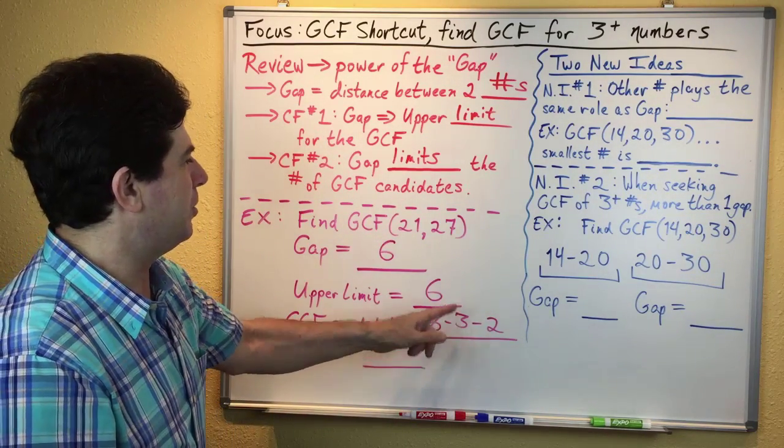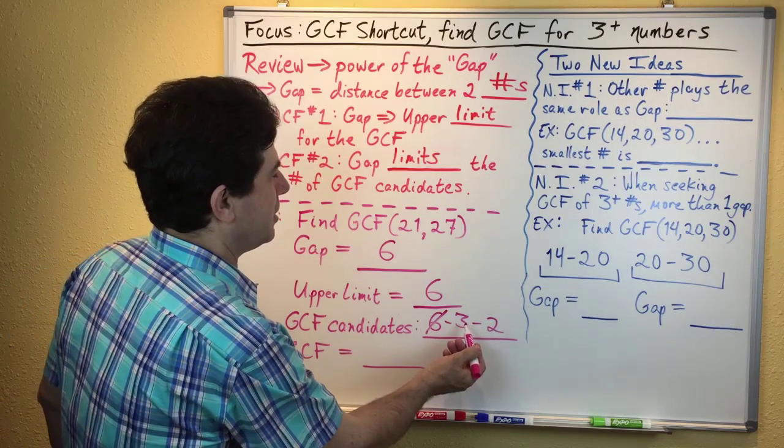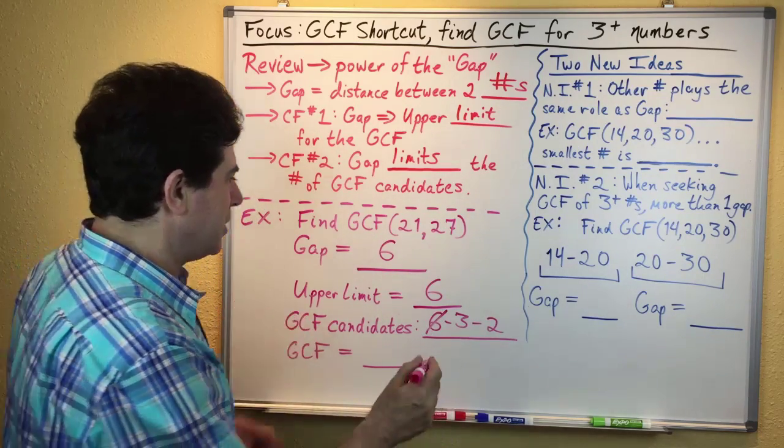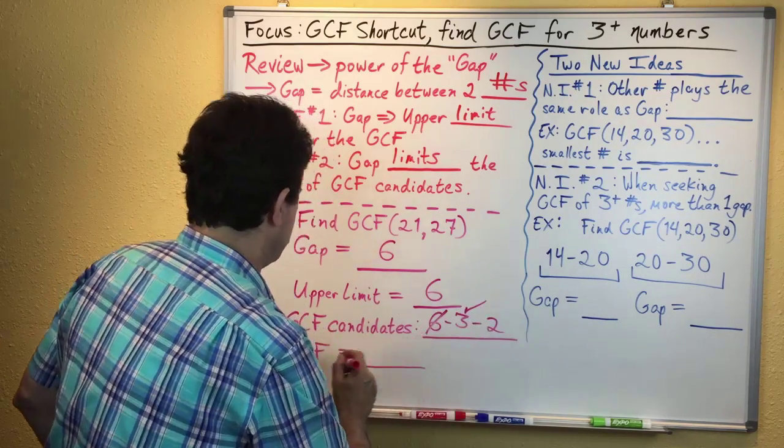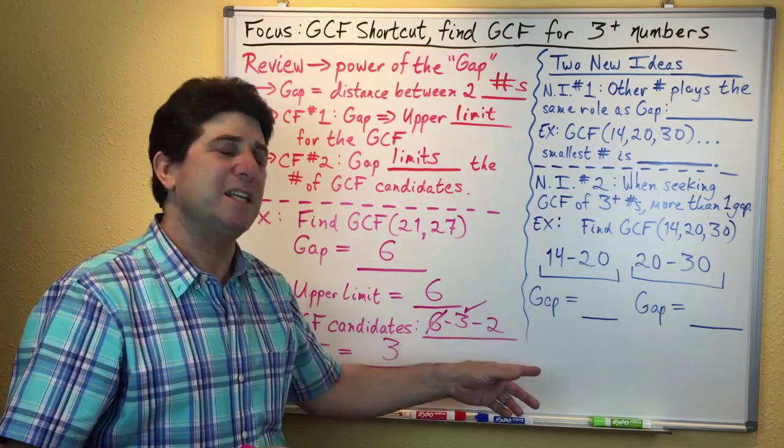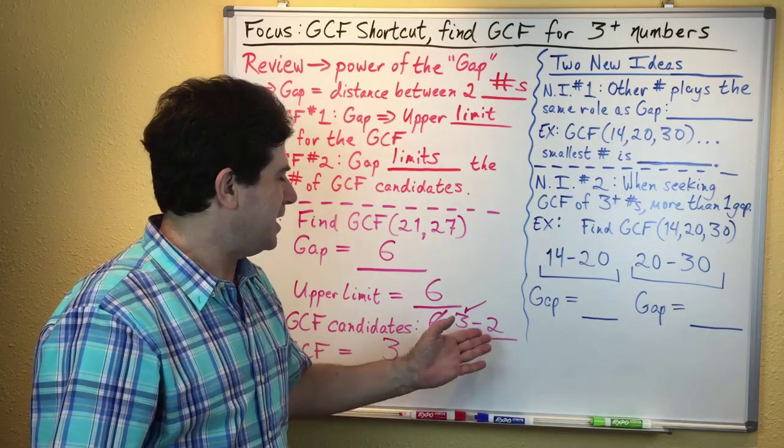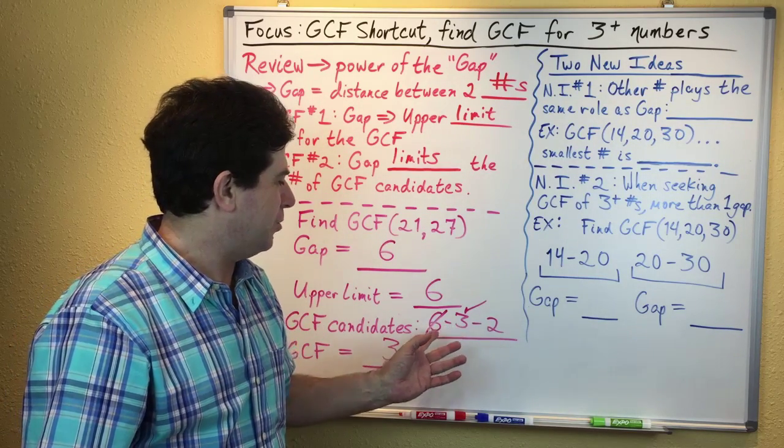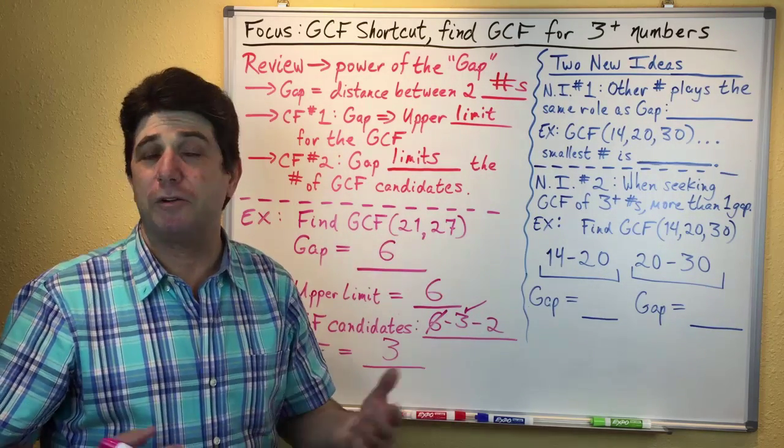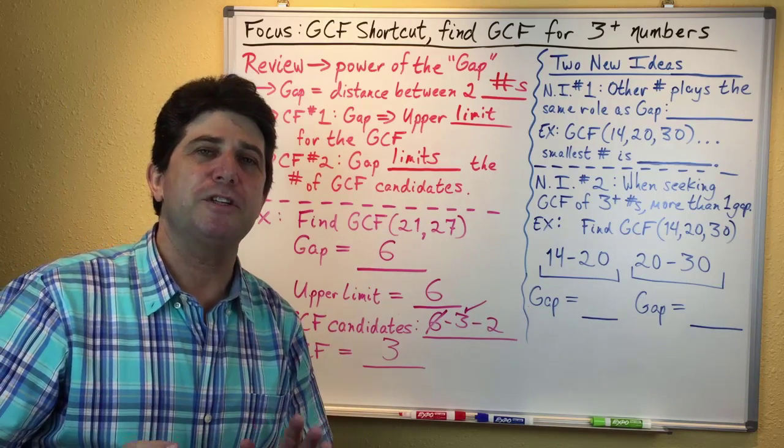Then we check three. Does three go into 21? Of course, it goes in seven times. Does three go into 27? It goes in nine times. So three goes into both numbers, meaning three is the GCF. Because we put these numbers in descending order, we know we don't have to check anything smaller than three, so we're done as soon as we find one number that goes into both.